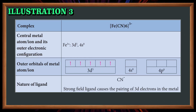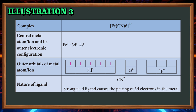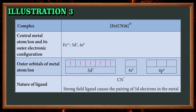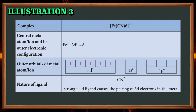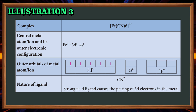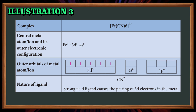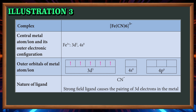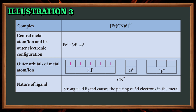Illustration 3: the complex ferric cyanide. The central metal ion Fe3+ has outer electronic configuration 3d5, 4s0. The outer orbital of the metal ion shows 3d5 with each cell having one electron, and 4s and 4p are empty. The nature of the ligand cyanide is a strong-field ligand, causing pairing of 3d electrons in the metal.